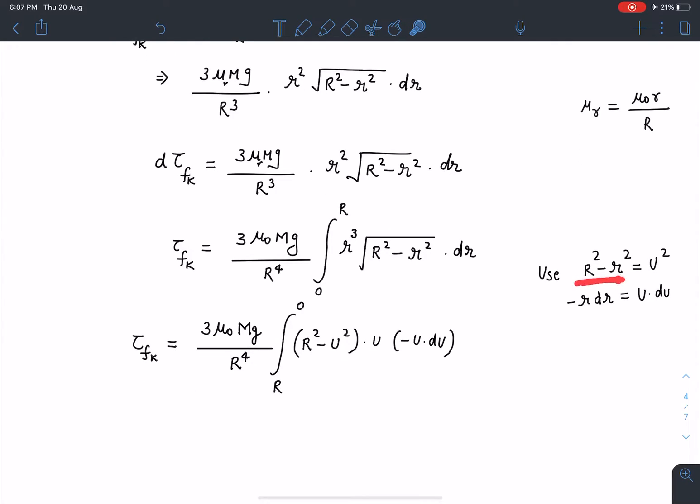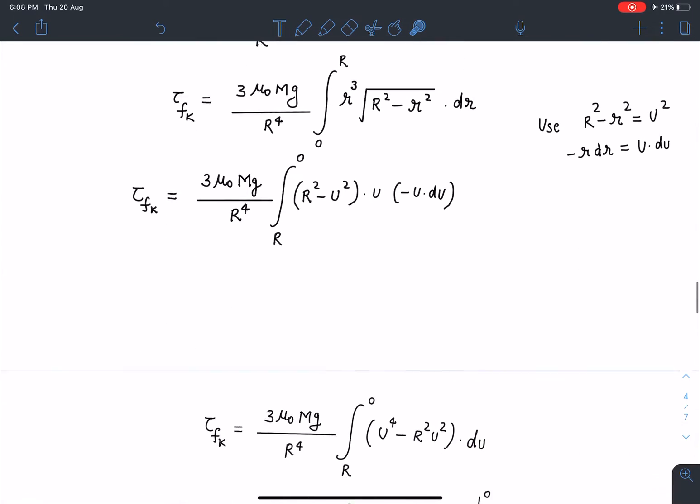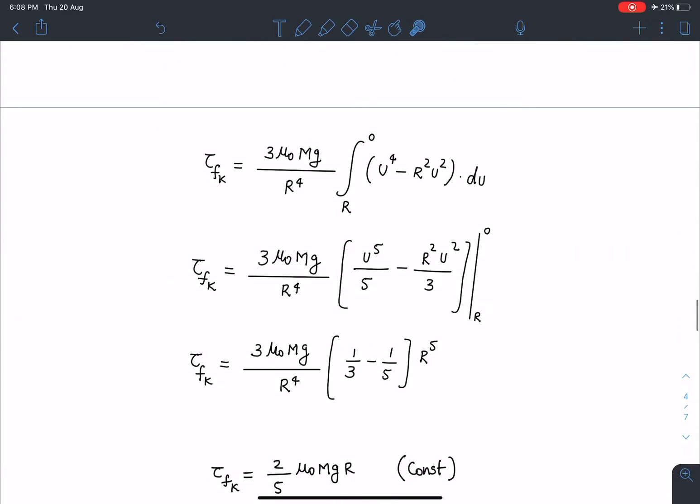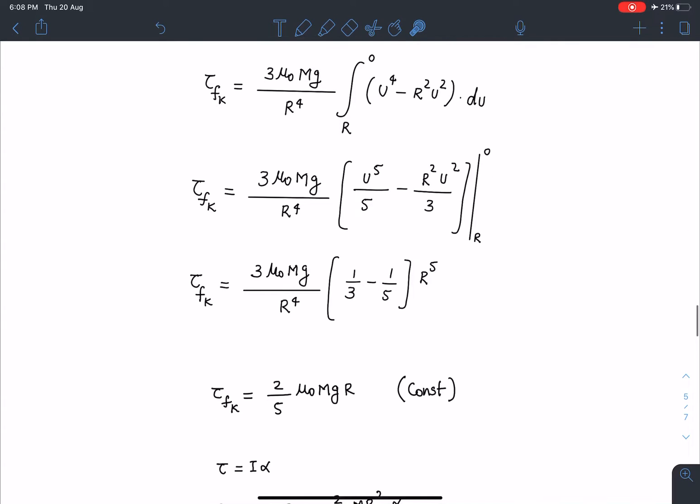If you see it's a very simple integral. If I substitute R squared minus small r squared equals u squared, these values give a simple polynomial integration. The value of mu_r I chose in such a way that this integral becomes very simple.